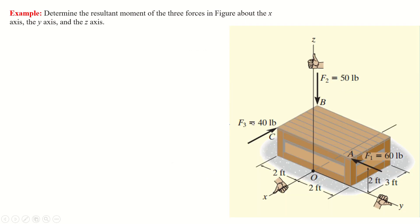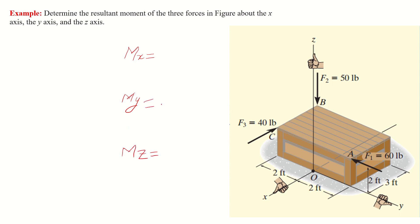Now we will solve this example. The problem asks you to determine the resultant moment of three forces shown in the figure about the x-axis, y-axis, and z-axis. There are three forces: F1 equals 60 pounds, F2 equals 50 pounds, and F3 equals 40 pounds. We need to find the moment about the x-axis, then the y-axis, and then the z-axis.